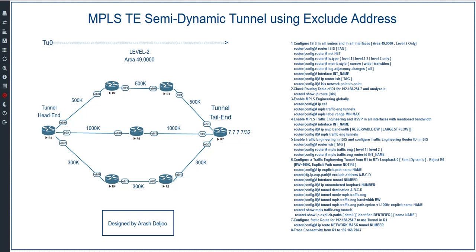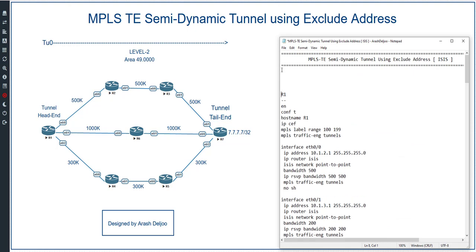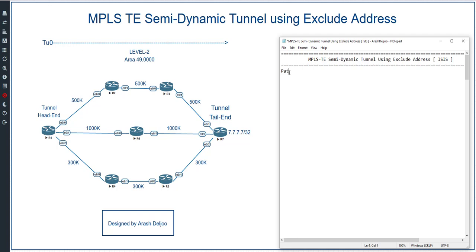The first question is: what is the semi-dynamic option for configuring the path option, and what is the usage of this method? Before starting, note that we have two types of semi-dynamic. We have explicit method, dynamic method, and semi-dynamic. Semi-dynamic has two types: the first is exclude address, which I'm going to talk about in this video, and the second is loose next hop.